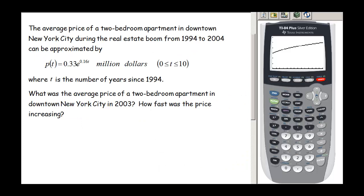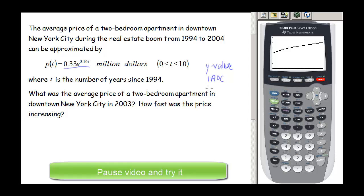Now let's look at the second problem. The average price of a two-bedroom apartment in downtown New York City during the real estate boom from 1994 to 2004 can be approximated by the function P of t, which has an exponential function. The units are million dollars and this model is valid for t from 0 to 10. They may ask for a Y value or an instantaneous rate of change — take a moment to identify which question is which.